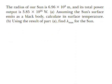The radius of our sun is 6.96 times 10 to the eighth meters, and its total power output is 3.85 times 10 to the 26 watts. Part A: Assuming the sun's surface emits as a black body, calculate its surface temperature.